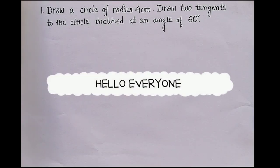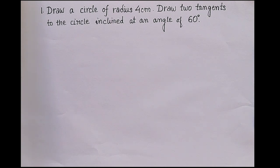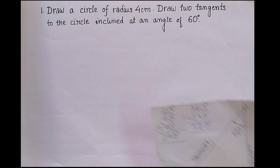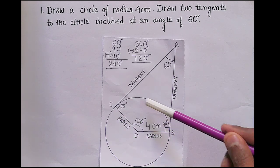Hello everyone, welcome to Math Matters. My name is Rahul Kumar Roy. The question is: draw a circle of radius 4 centimeters and draw two tangents to the circle inclined at an angle of 60 degrees. First, we will understand this with a figure — we have to draw a circle of radius 4 centimeters.